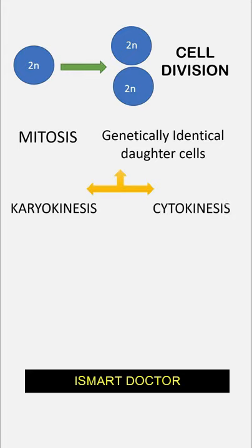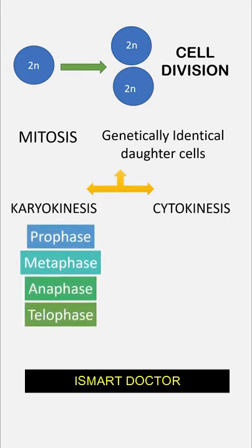Mitosis consists of karyokinesis and cytokinesis. Karyokinesis has four phases: Prophase, Metaphase, Anaphase, and Telophase. A useful shortcut to remember these is PMAT.